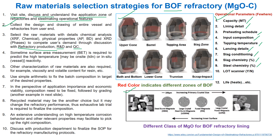Different grades of magnesia, starting from DBM to FM and LCFM (large crystal fused magnesia), are required and composition can be optimized according to user demand. Fourth, sometimes surface area measurement (BET) is required to predict the high temperature reactivity. This is being done at the refractory unit in kiln and in the steel processing vessel.